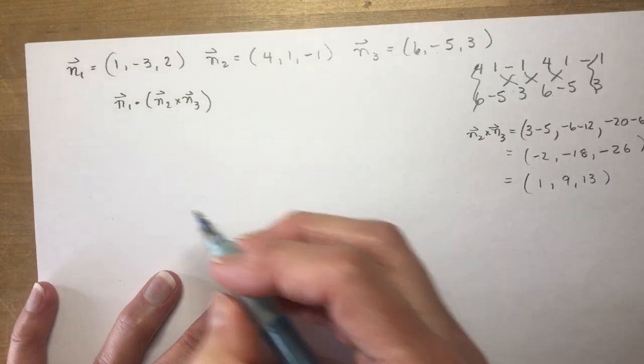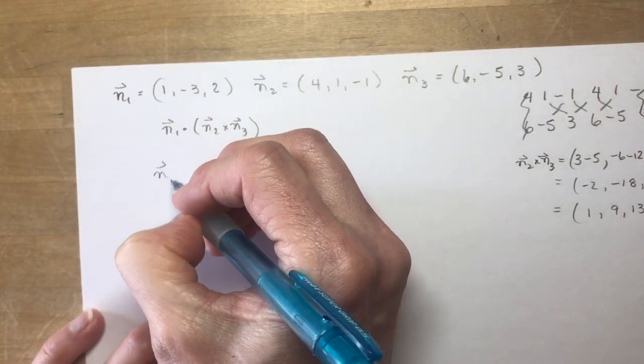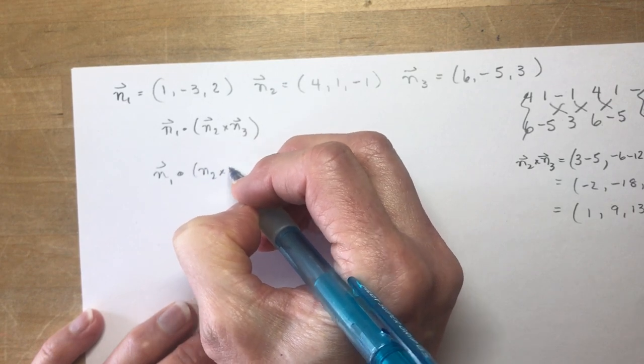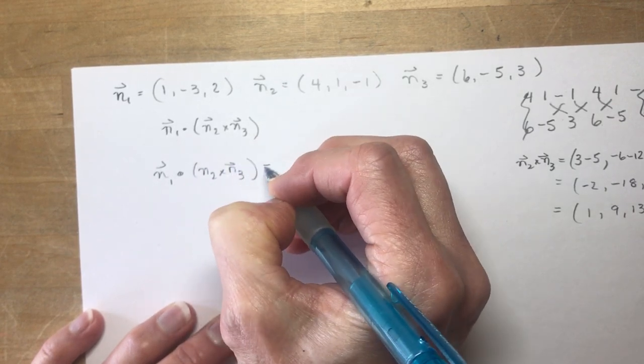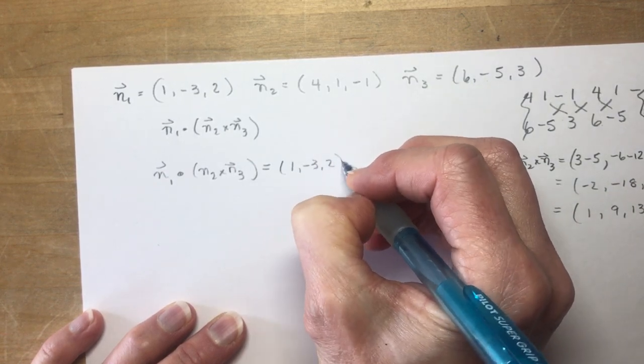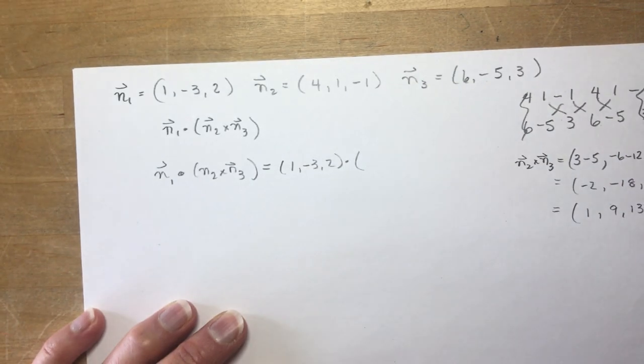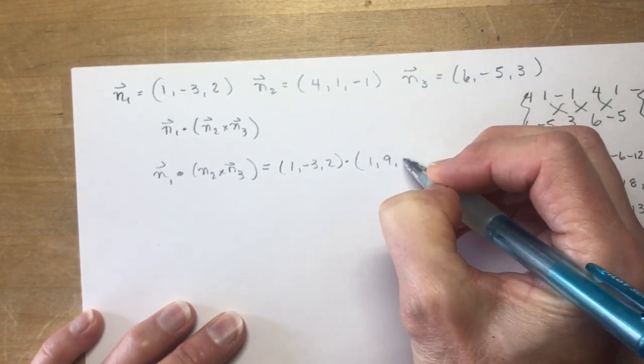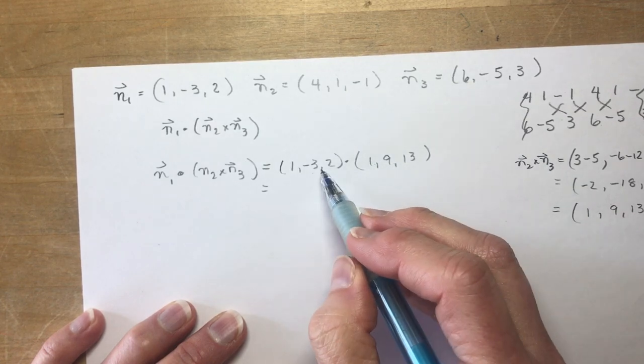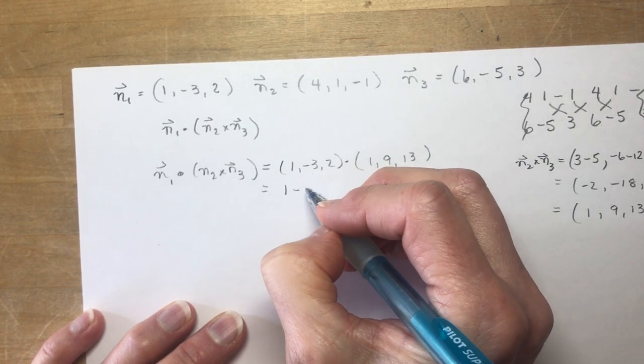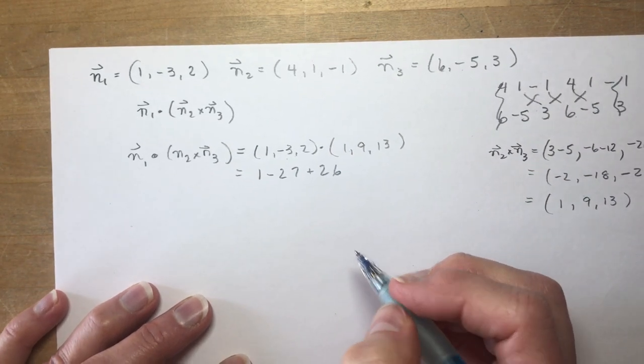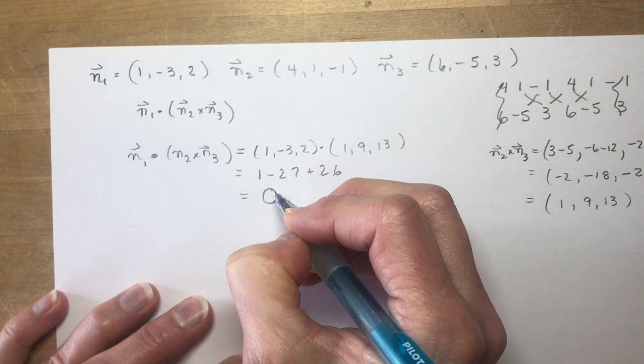So now I'm going to write out the dot product. So, normal 1 dotted with the cross product N2 cross N3 equals. So, I write out normal 1. So, that's 1, minus 3, 2, and I'm dotting it with 1, 9, and 13. And that's going to give me 1, minus 27, plus 26. So do you see what's happening here? What's going to happen? We're going to get 0.